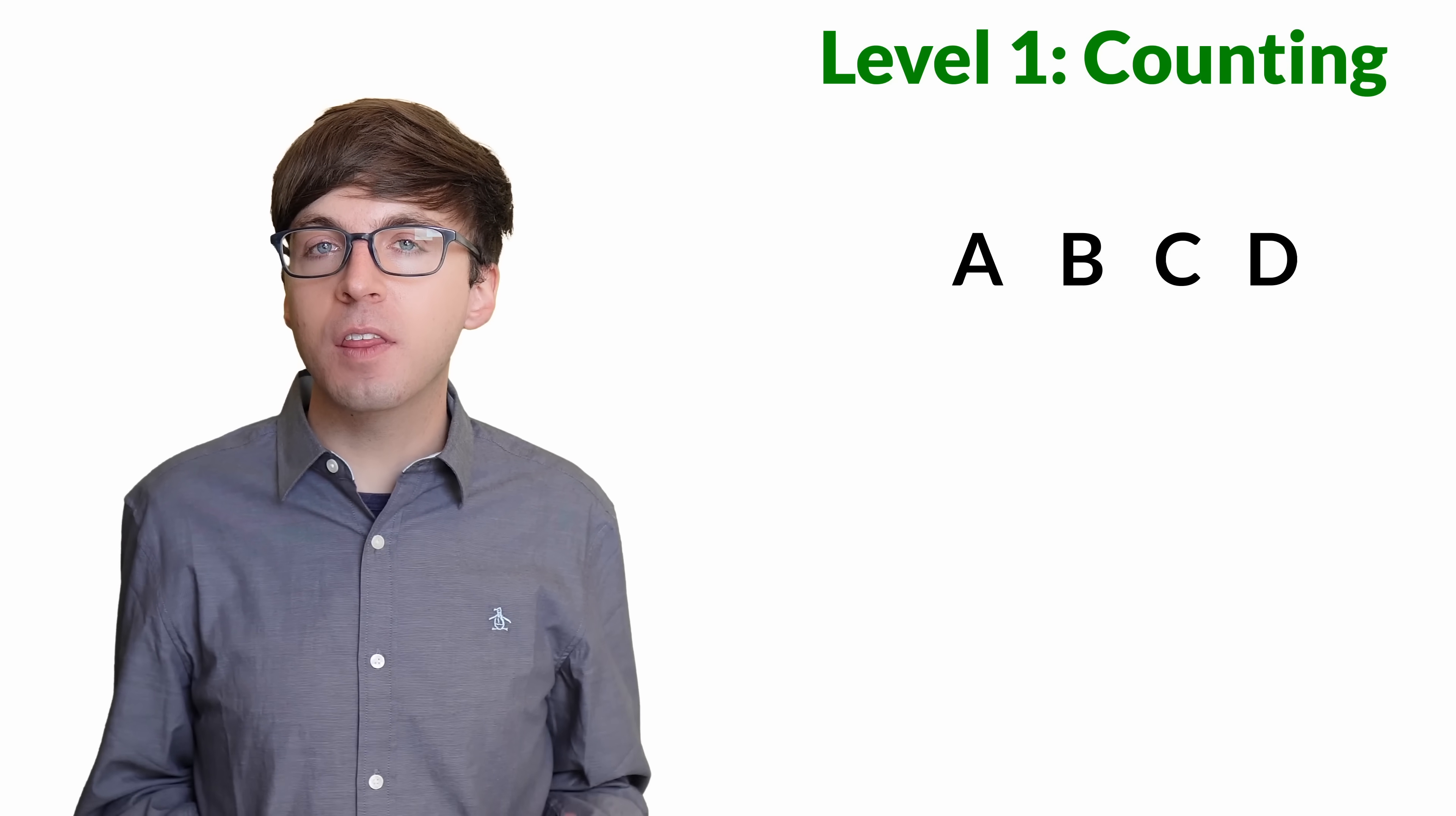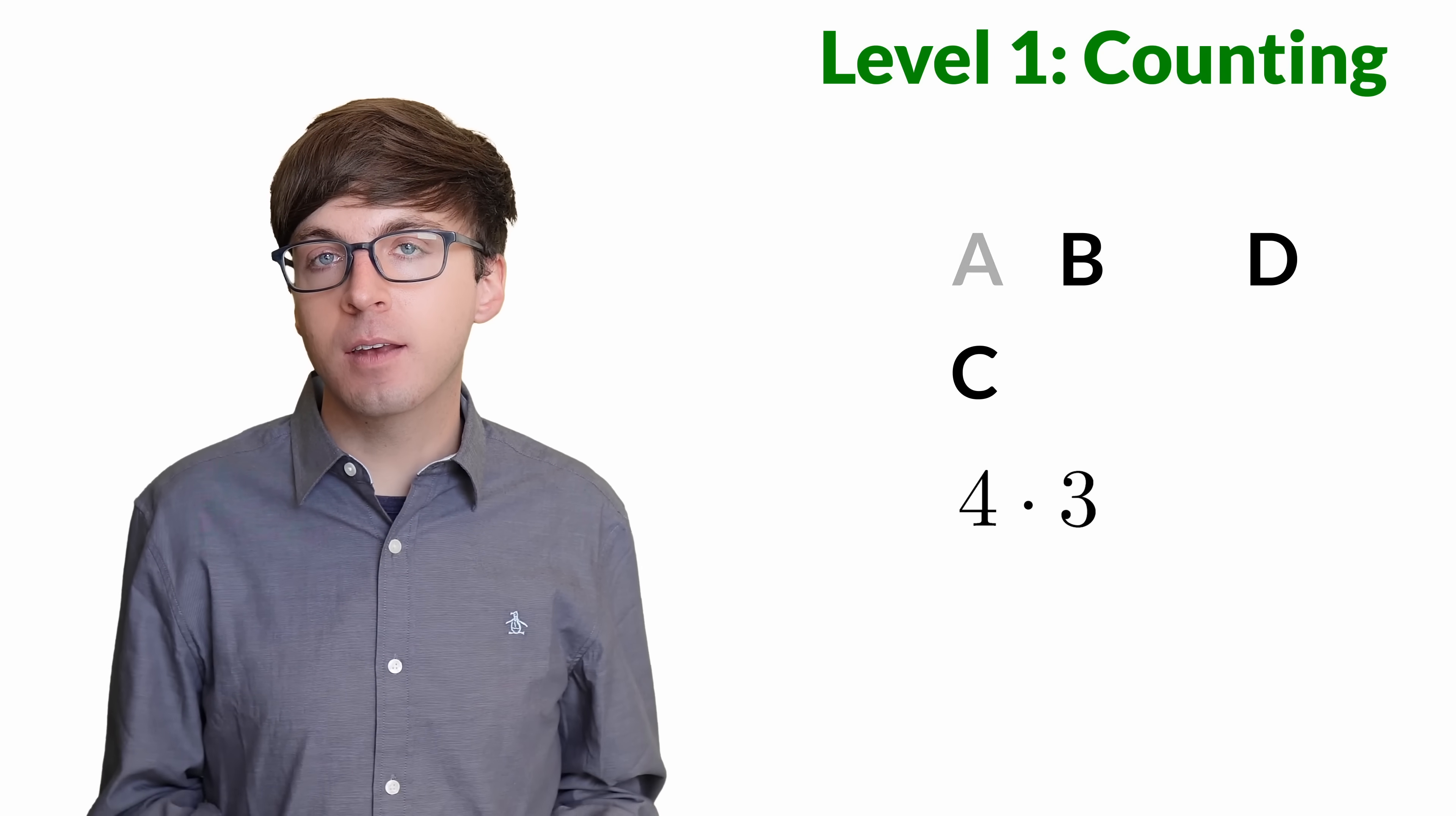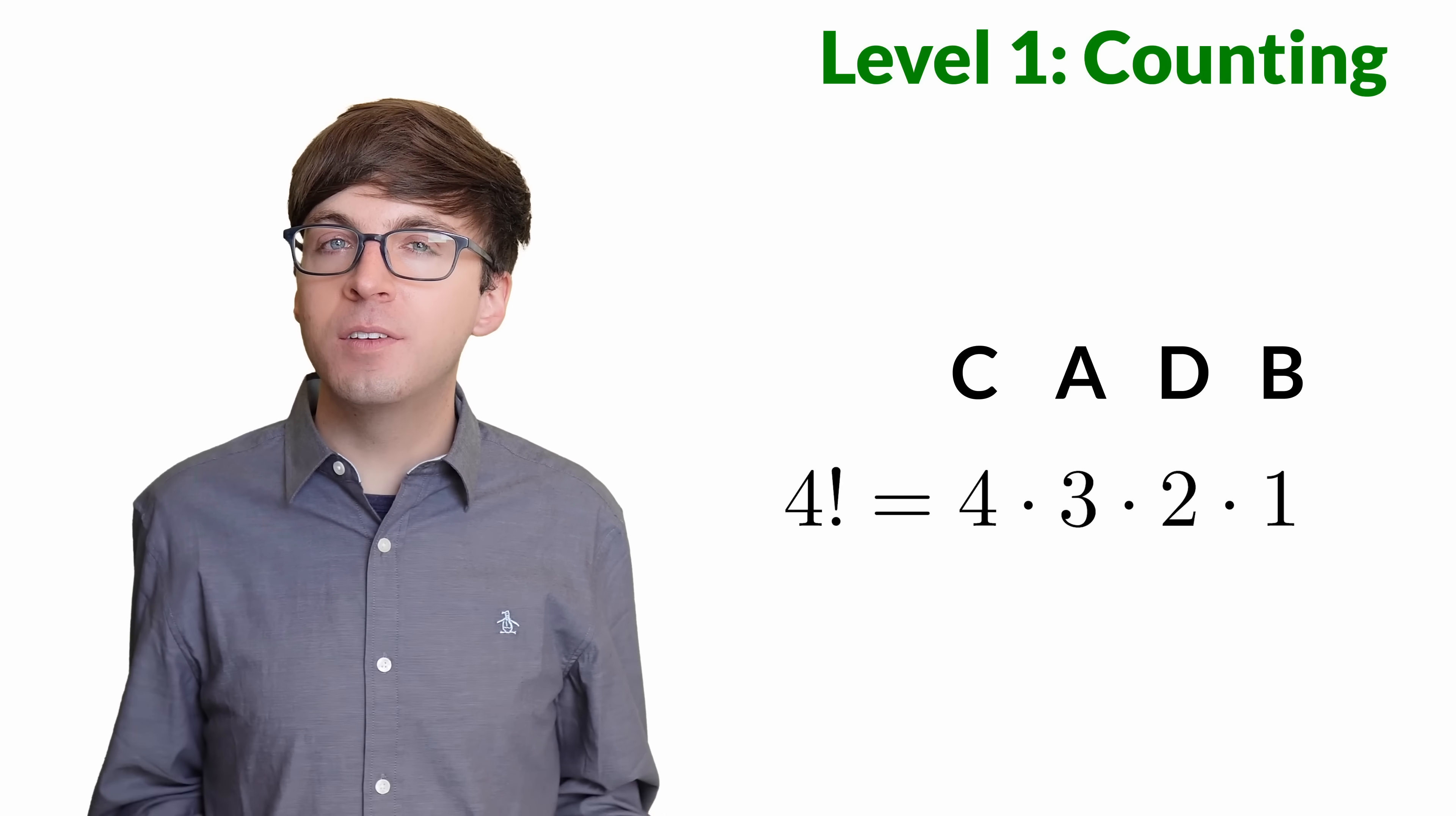For level 1, let's think about what factorials mean in terms of counting. 4 factorial tells us the number of ways to arrange 4 distinct objects in a row. Any of the 4 objects can be picked first, but once we've picked one, now there's only 3 remaining objects to be picked second. Then there are 2 remaining, and lastly 1. We multiply all these values to get 4 factorial, which counts the number of possible permutations of these 4 objects.